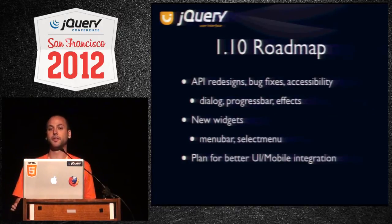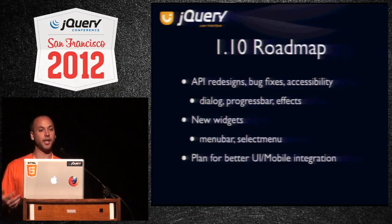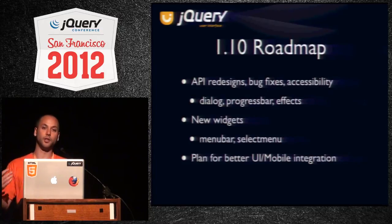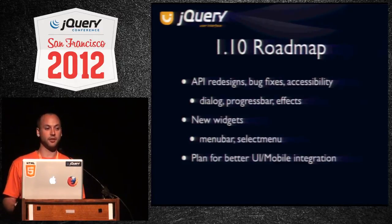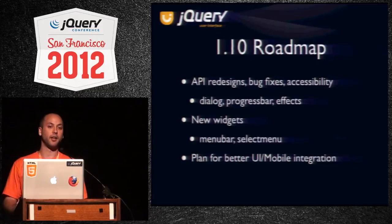For 1.10, you can expect bug fixes, accessibility improvements, and API redesigns for dialogue, progress bar, and effects. When 1.10 comes out, these will have new APIs but should be BackCompat with 1.9, and because they're not changing in 1.9, they should also be BackCompat to 1.8. We're also looking to introduce menu bar and select menu, and we'll start working on better integration between jQuery UI and jQuery Mobile. Right now the projects are pretty much separate — we don't share too much code. The plan has always been to share a lot of code, but because of the API redesigns and our priorities, we haven't been able to focus on that. During the 1.10 phase, we'll be figuring out how to get rid of that divide.